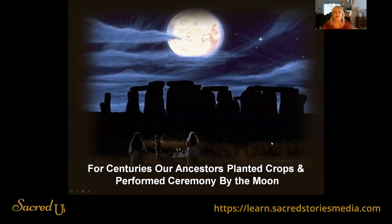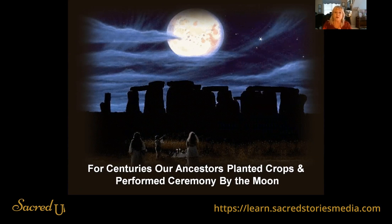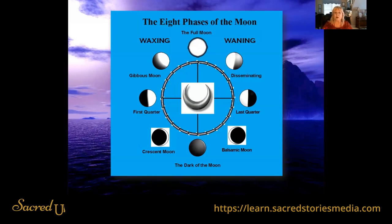For centuries, our ancestors actually understood this probably a lot better than we do today, and we've done scientific tests to prove it wasn't just crazy superstition — it was actually based on science. They would plant by the dark of the moon because the energy was at its lowest — it was better for the seeds, letting them really germinate. Then months later, when the plant had grown to fullness, they would harvest by the full moon because that way they got the greatest nutritional value from their food.